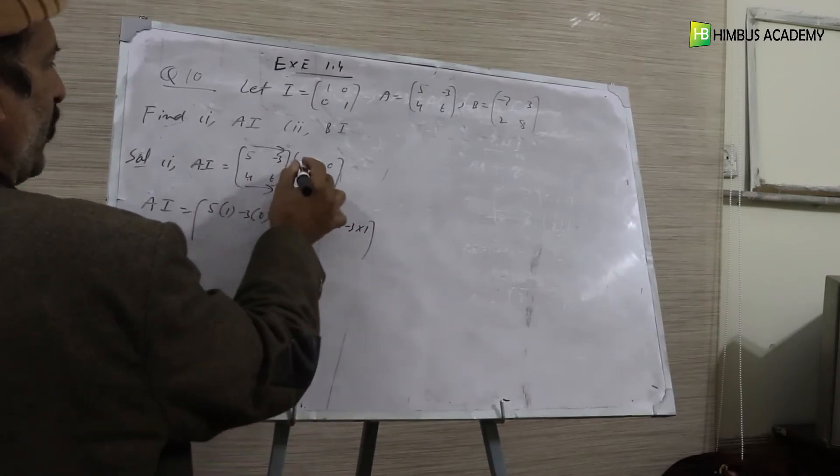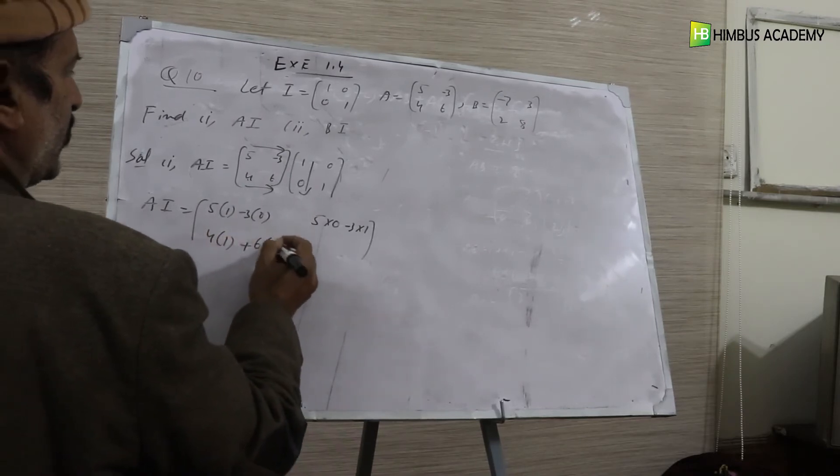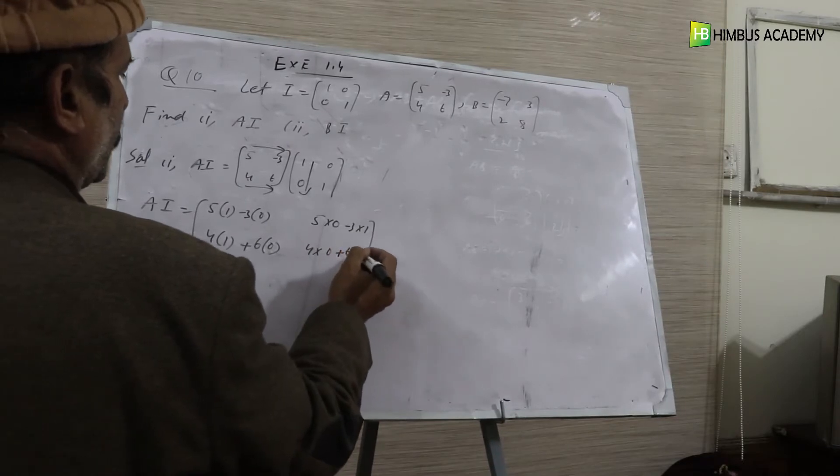Second row: 4 multiply 1, 4, 1, 0, plus 6, 0, 0. And 4, 0, 0, plus 6, 1, 0.